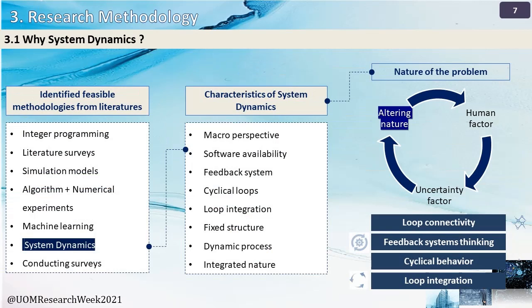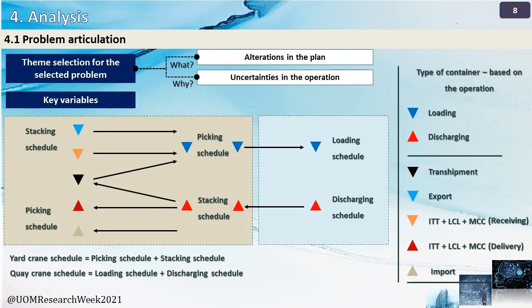After defining our research problem, we moved to the methodology part. Most studies were conducted under an operations research context focusing on solving one particular problem. Since our focus was different and we wanted to capture the whole planning system, we selected system dynamics as our methodology. It has the needed characteristics such as cyclical behavior, loop integration, and feedback system thinking. Loading and discharging were the most prioritized operations over receiving and delivery operations, since minimizing vessel turnaround time was the common objective. This is the reason to select the quay-yard interface as the scope of our research study.